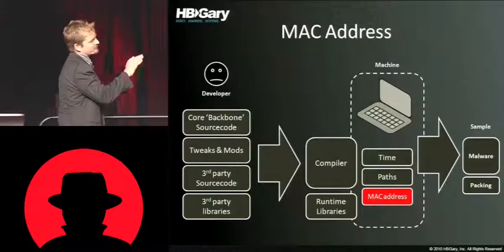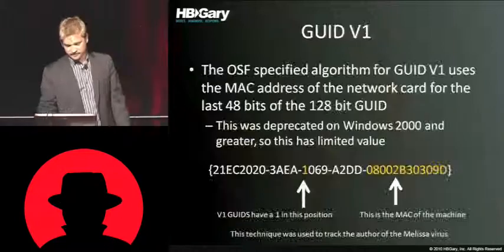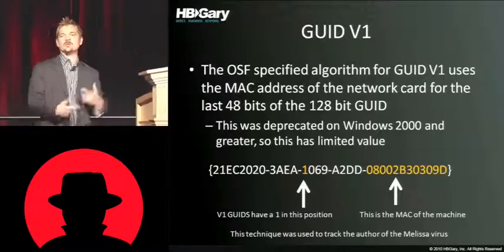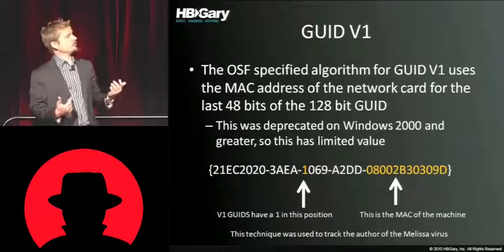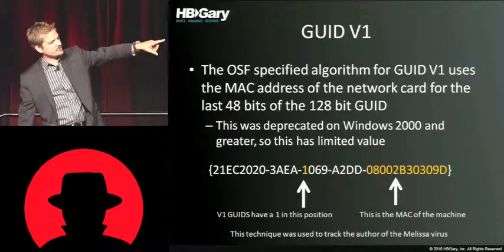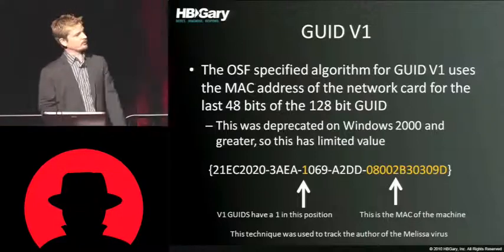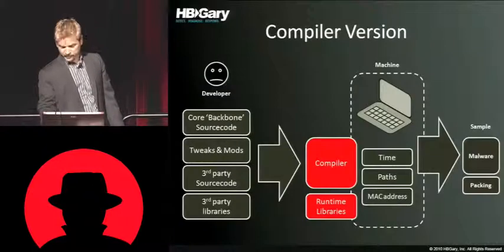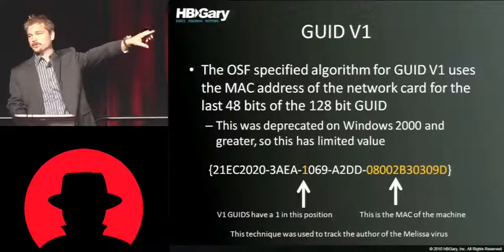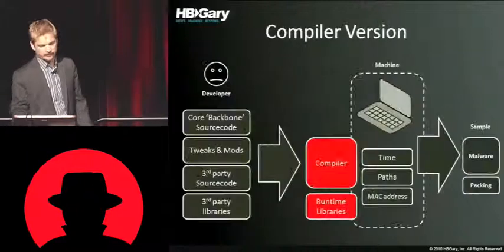Here's an interesting note on MAC addresses — don't get too excited. You're not going to be able to use this technique as easily as you used to. But everybody remembers the Melissa virus — here's how they actually caught the author. GUIDs are generated in multiple versions. A V1 GUID has a '1' in a specific position, and the digits at the end are the MAC address of the machine that generated it — that's how they caught the Melissa author. Version 4 GUIDs have a '4' in that position, and the end digits are a random number, so you can't use that technique. I just put this up to show the possibilities of what can be represented in binary alone.